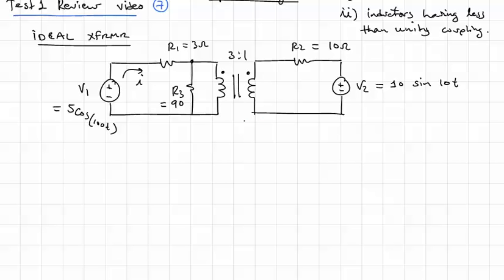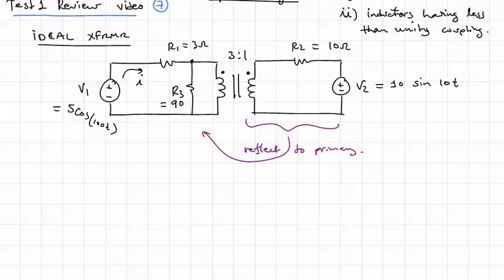So we're going to take this and we're going to reflect it to the primary, what I'll call the primary on the left here. Remember that when you convert impedances over through transformer turns ratio, they go by turns squared.